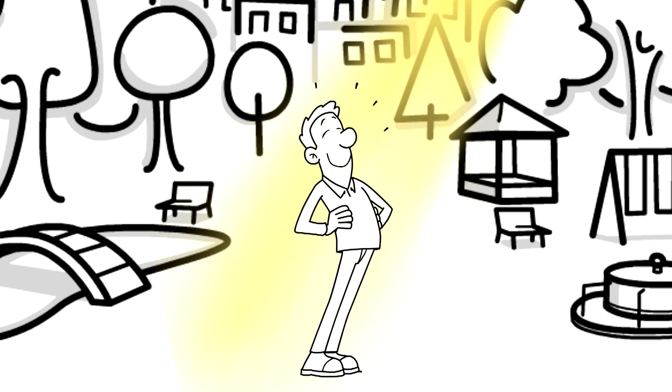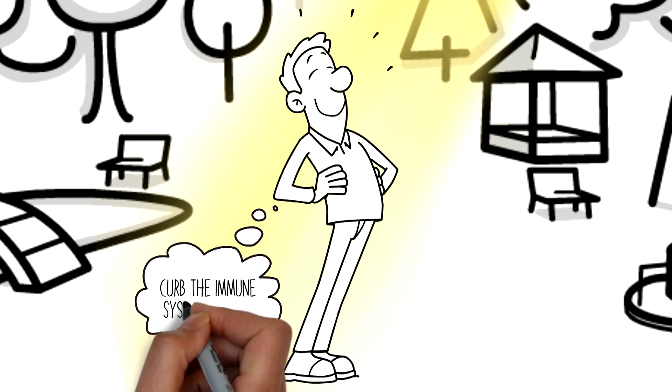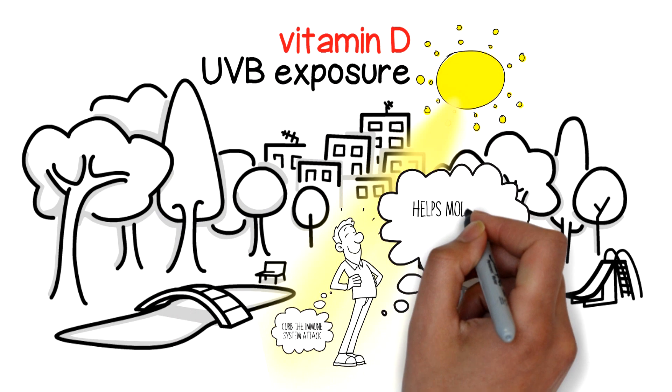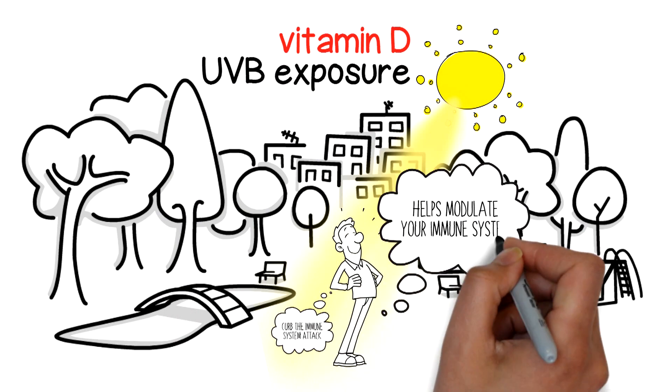Ultraviolet light in sun exposure prevents this in two ways. First, it curbs the immune system attack and secondly, the vitamin D produced through UVB exposure helps modulate your immune system so it works the way it should.